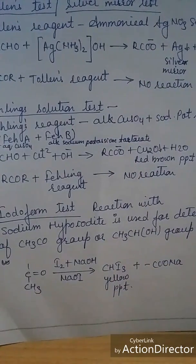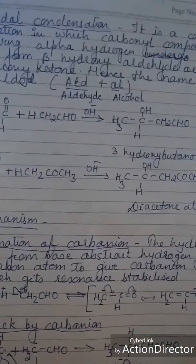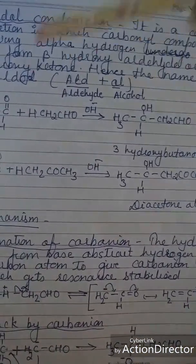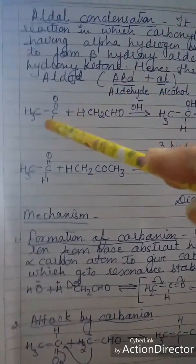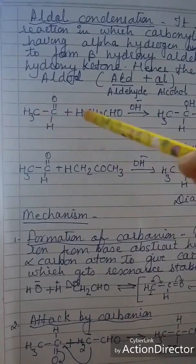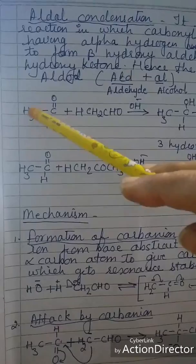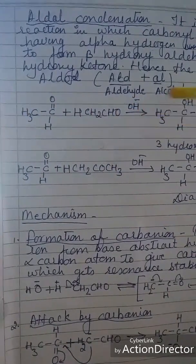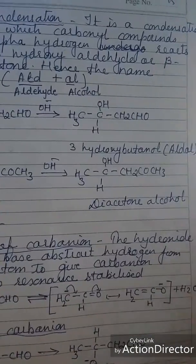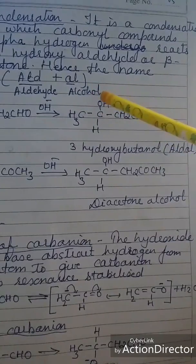Now let us talk about aldol condensation. It is a condensation reaction in which carbonyl compounds having alpha hydrogen atoms react. Alpha refers to the first carbon with respect to the functional group. In the presence of a base they react to give aldol. We call it aldol because the product contains both an aldehyde group and an alcohol group.